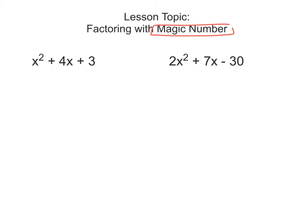So if you look at these two trinomials, both of these are quadratic — three terms, x squared in there. What they're in is they're in ax squared plus bx plus c form, both of them. ax squared plus bx plus c.